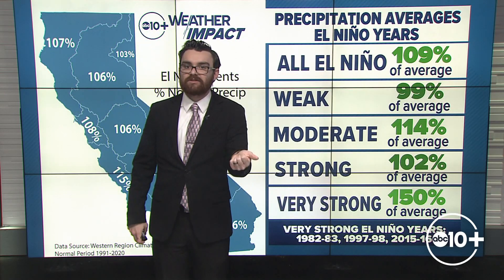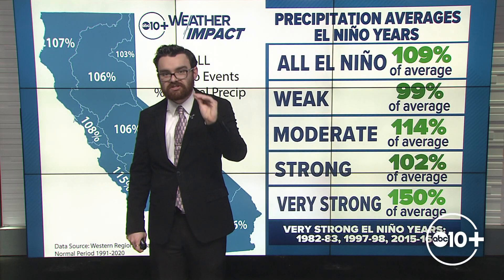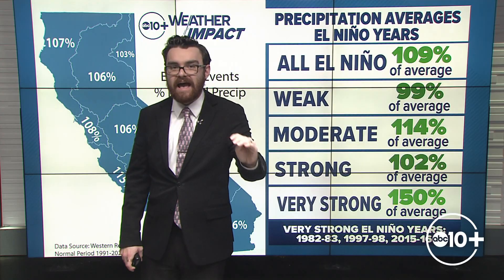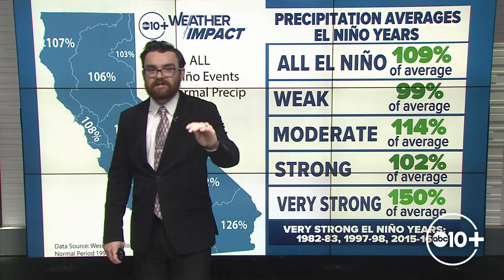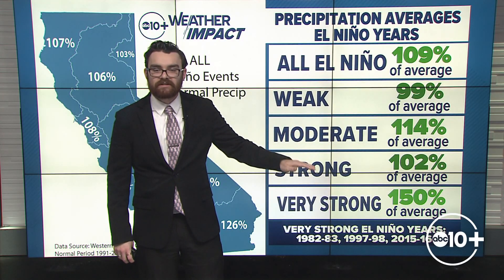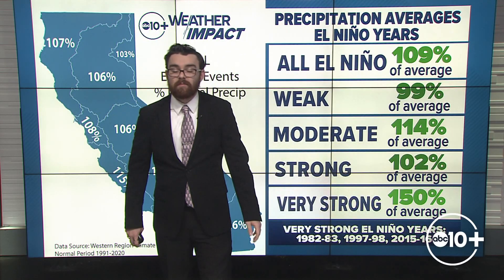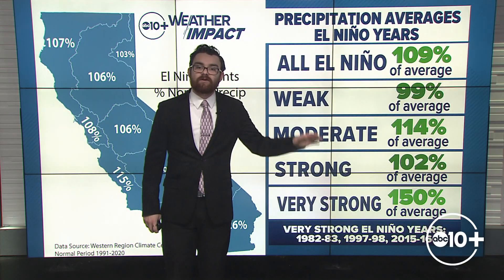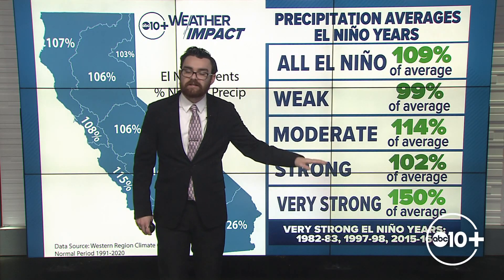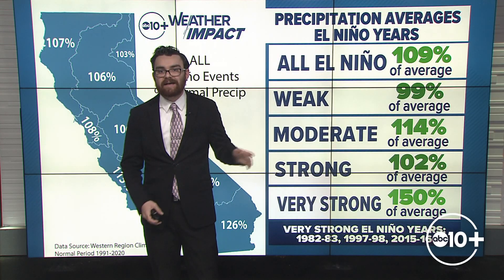A weak El Niño is where the departure from average is just a little more than half a degree Celsius. A strong El Niño is 1.5 degrees Celsius or warmer above the average mark. So what we would naturally think is: the stronger the El Niño, maybe the wetter the year — but that's not always the case.